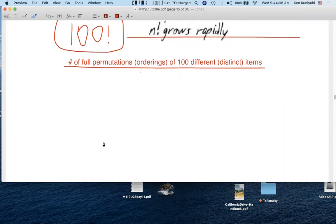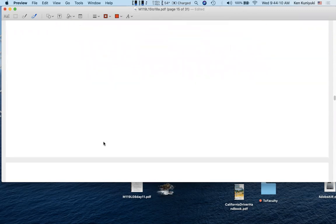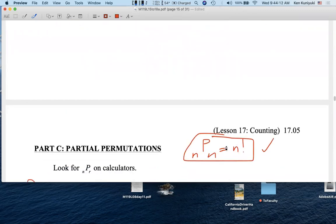So that's the number of full permutations of 100 distinct items. Now that's fair for homework. These n-factorial problems are fair for your homework. But partial permutations will not be fair on your homework.